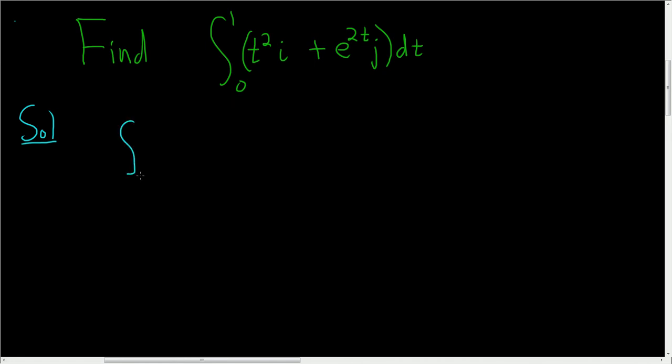It'll be the definite integral from 0 to 1 of t squared dt, and then we still have the i plus the definite integral from 0 to 1 of e to the 2t dt, and we still have the j.